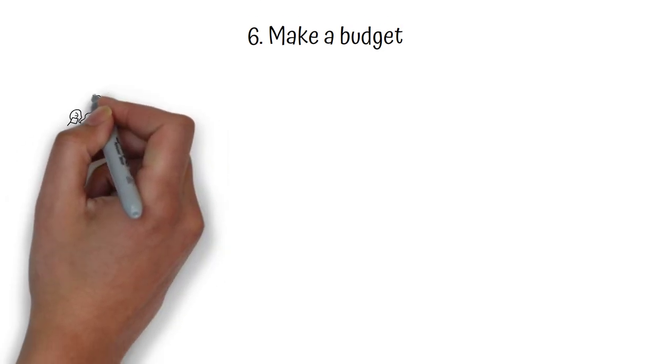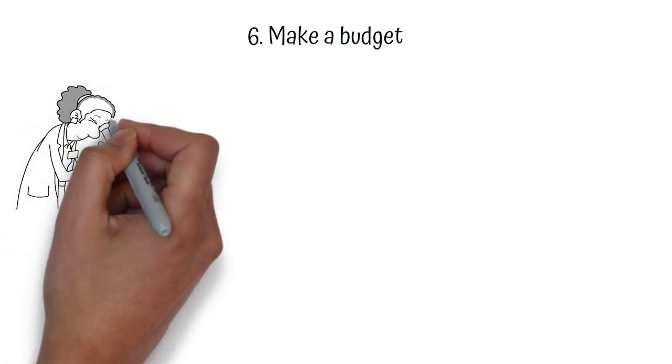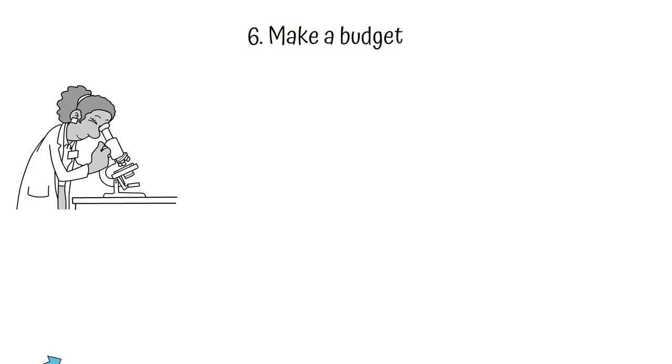Number 6, Make a Budget. A smart way to make a budget is to start by tracking your expenses for a month to get a sense of where your money is going. This can help you identify areas where you may be able to cut back.